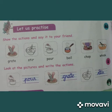Look at the pictures and write the actions. First one — Pour. Second — Grate. Third — Stir.